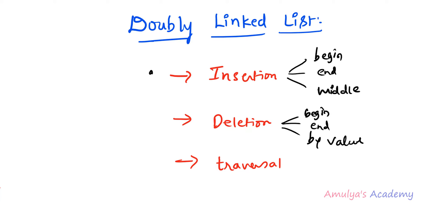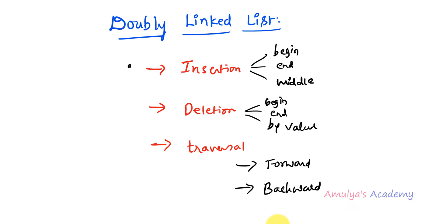In the doubly linked list, each node contains the link of the next node as well as the link of the previous node, which makes moving forward and backward easier. One advantage of the doubly linked list over the singly linked list is that bidirectional traversal is easier. However, the disadvantage is that we need extra memory to store two links, whereas the singly linked list only stores one link per node.